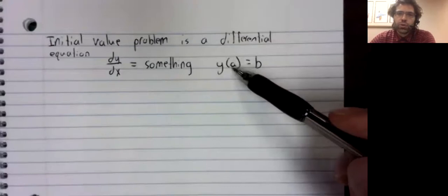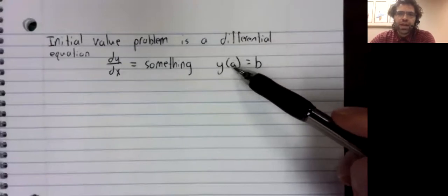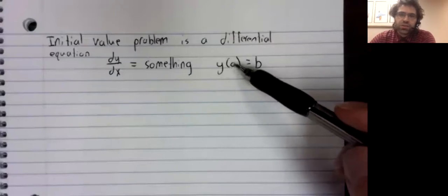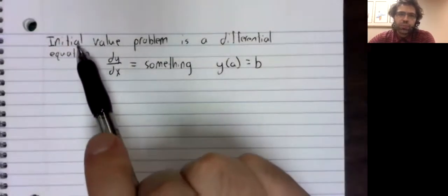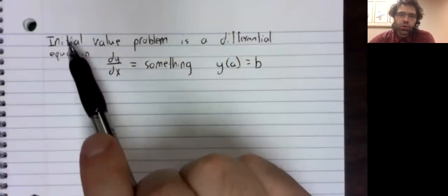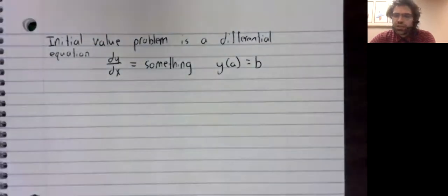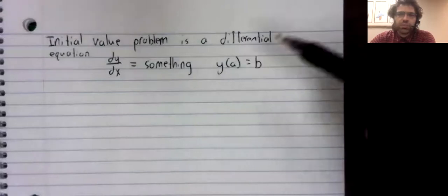You're told its value at some point. This number is very frequently zero, which is where the word initial comes from. But it doesn't have to be, it could be whatever.